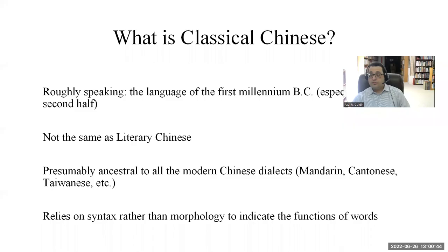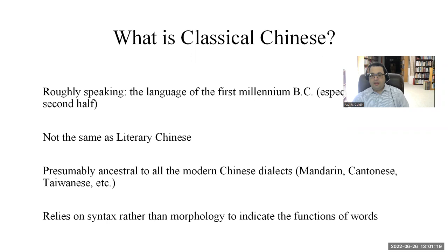How Classical Chinese Works. What is Classical Chinese? Roughly speaking, it's the language of the first millennium BC, especially the second half, since we have far fewer sources for the first half of that period. It's not the same as what's sometimes called Literary Chinese. The difference is that we believe Classical Chinese was both written and spoken. We don't have records of the spoken language, so we can't be positive.